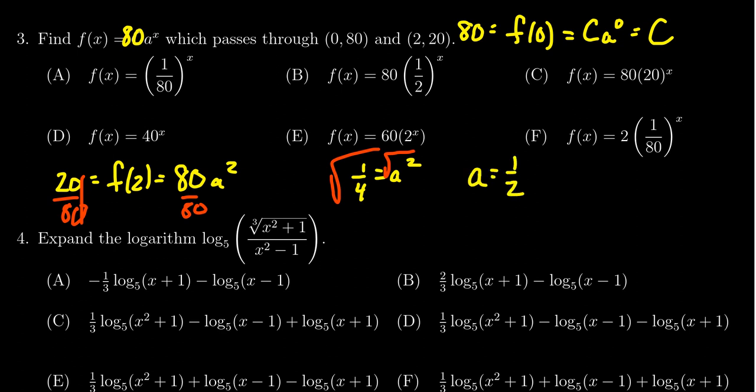So notice what we have here. We have that a equals 1 half. We have c equals 80. So we have to look for a function that's going to look like f of x equals 80 times (1/2) to the x. In which case, then we select choice B, as that's exactly what we just found.